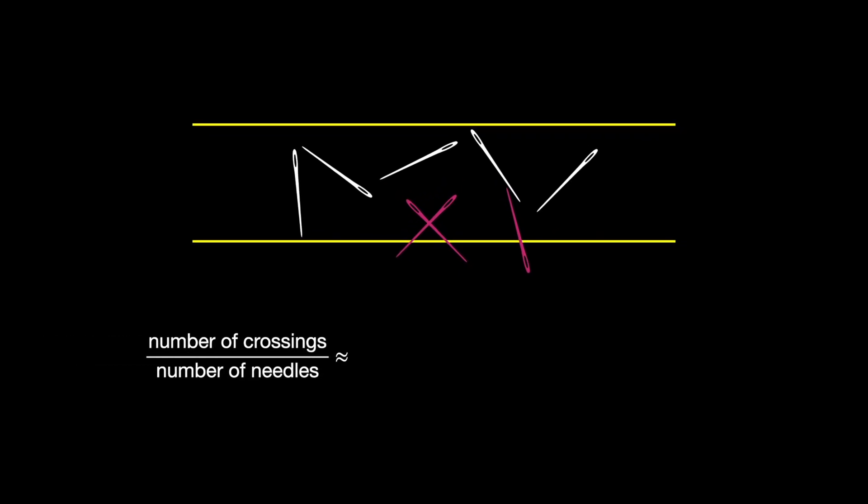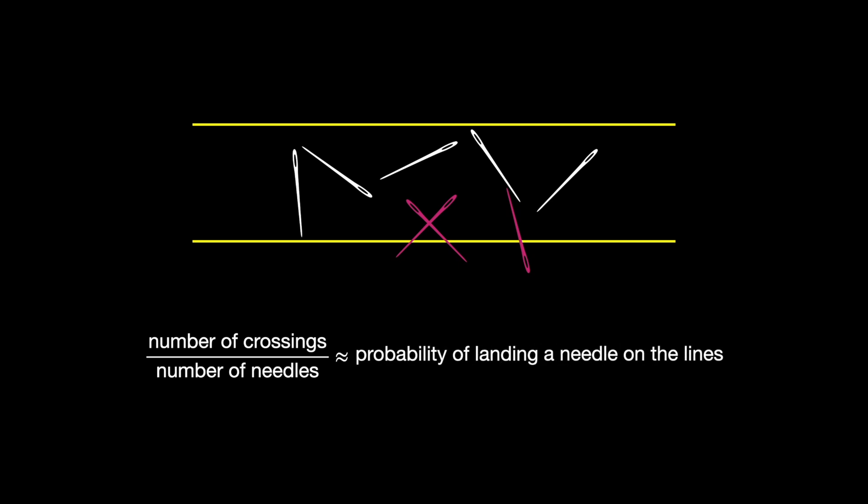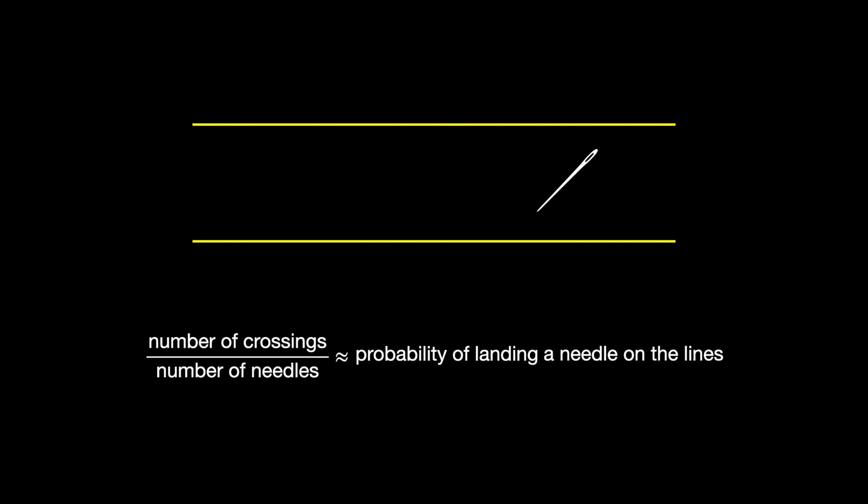With a large number of needles, the ratio of the number of crossings to the total number of needles is approximately the probability of landing a single needle on the line. What a lot of presentations do is they imagine that the lines on the floor are fixed, and then they try to compute how the needle could land on one of the lines. But this is a hard problem, and I'm going to simplify it.